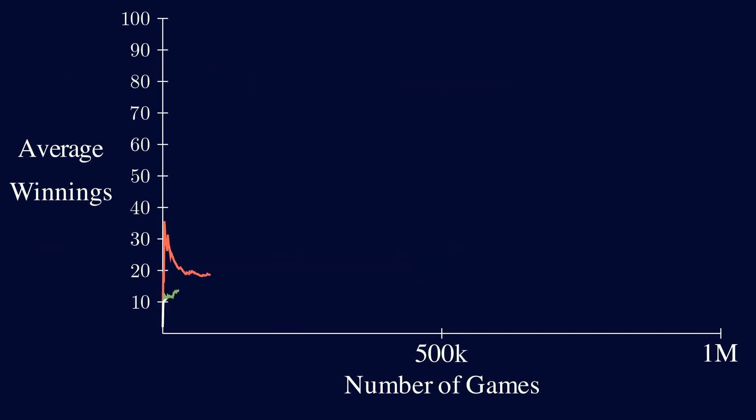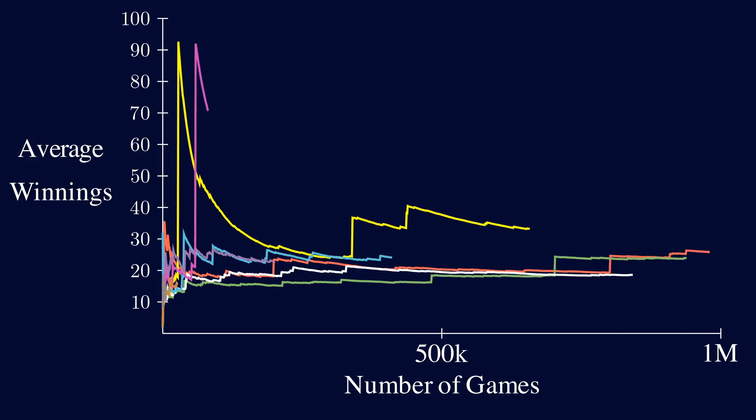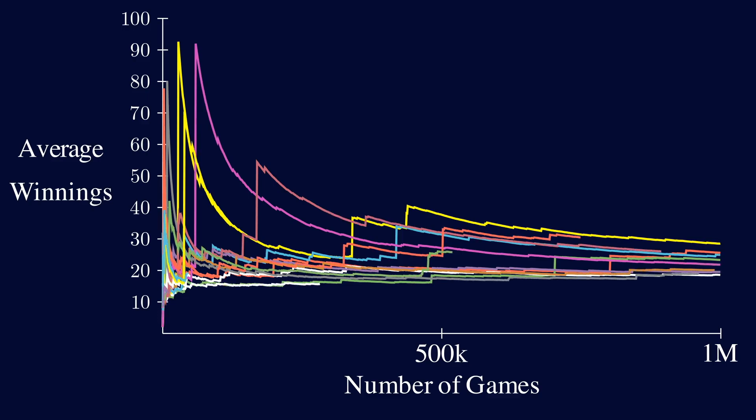Now, let's try playing the St. Petersburg game a million times across multiple different runs. You can see that there's still a lot of variance in the average winnings, even at the end of a million games.